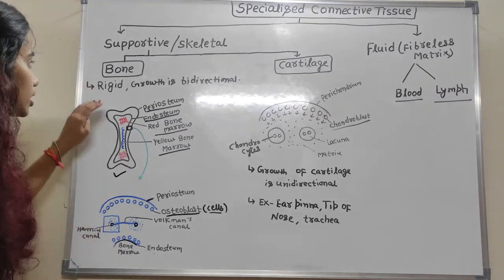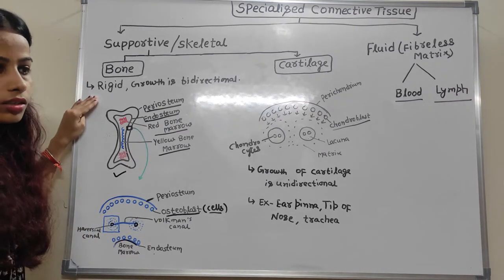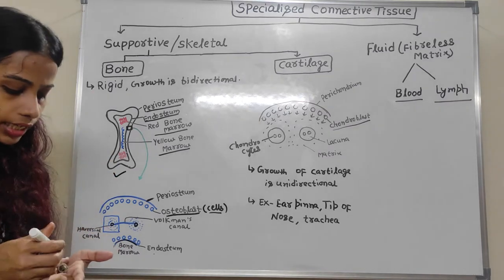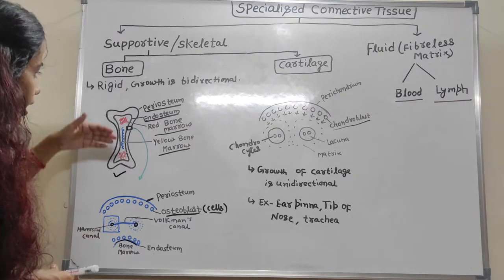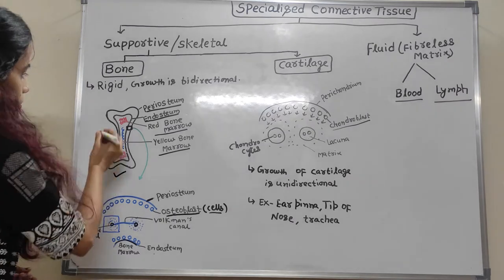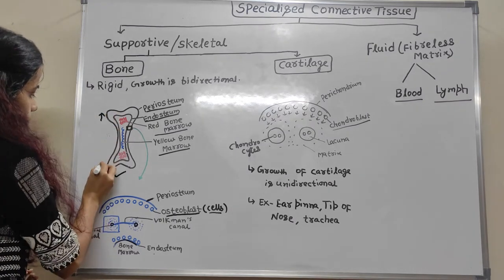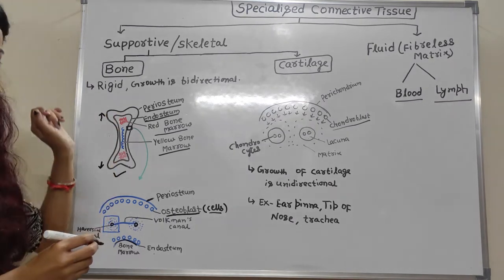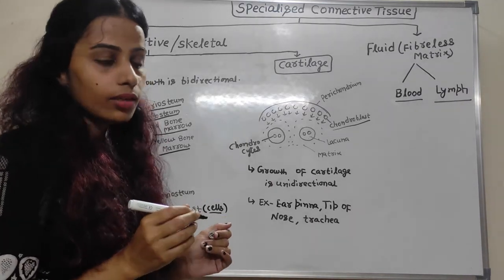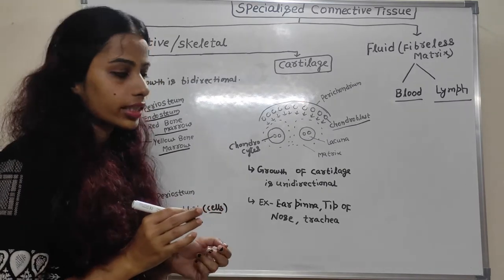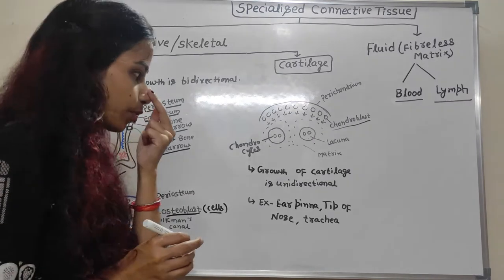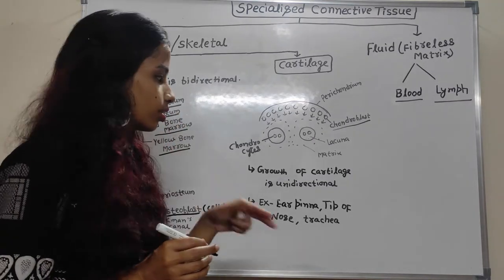Bone is rigid and hard, and its growth is bidirectional — meaning bone can grow from both sides. Cartilage, on the other hand, is flexible and soft. It is present in the ear pinna, upper part of the ear, tip of the nose, trachea, and other locations.